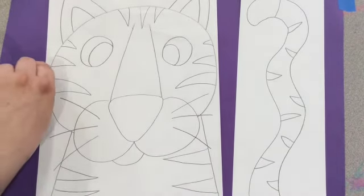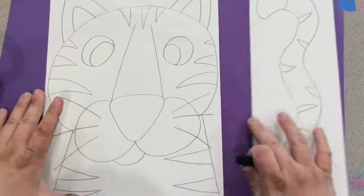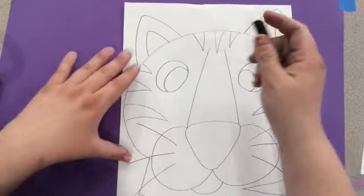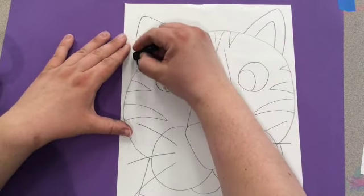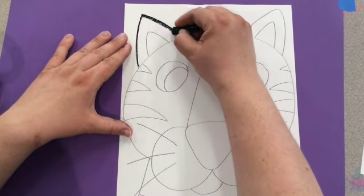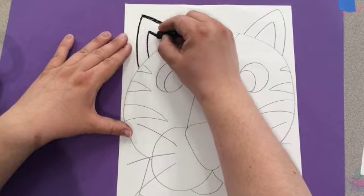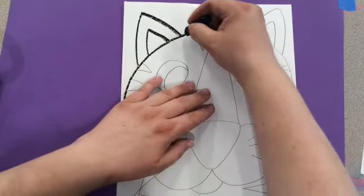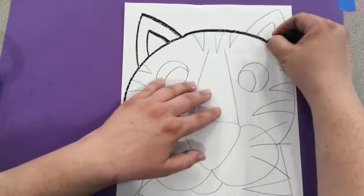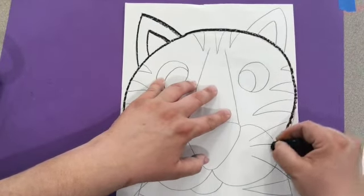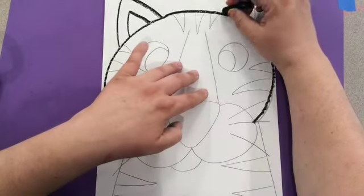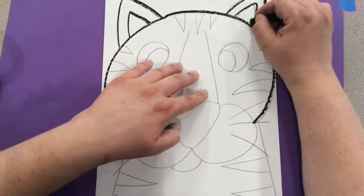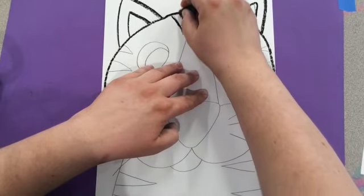Next we're going to be using our oil pastel. We've used these before. Remember it will get on to your fingers and it could create fingerprints on your picture. So you want to do your best not to touch the black line with your hand that's holding down the paper. We're going to go through and we're going to trace over all of our pencil lines, and then we'll color a few of the spots in.